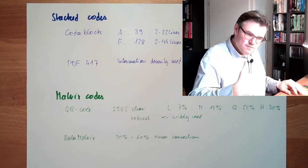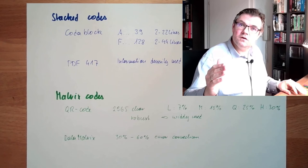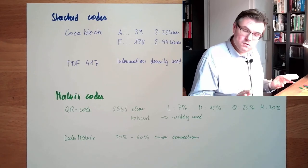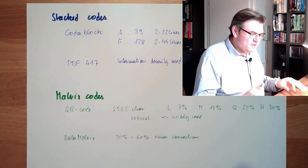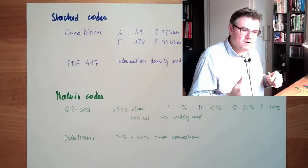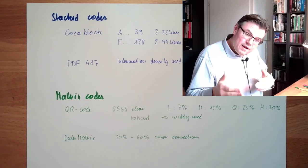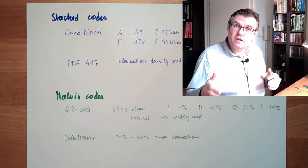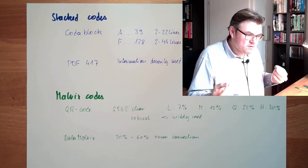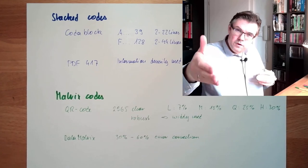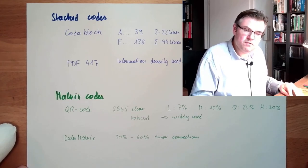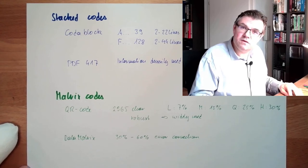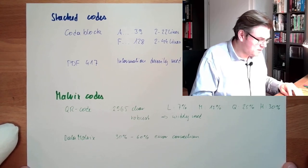Data Matrix is used for instance for the internet stamp, for part identification lasered in parts in the automobile and car industry, and we have marked our computers in school with this Data Matrix. It has a very specific form you can recognize for sure.